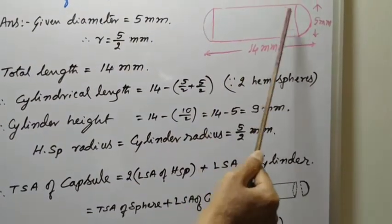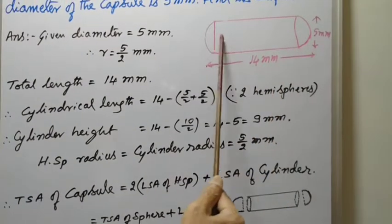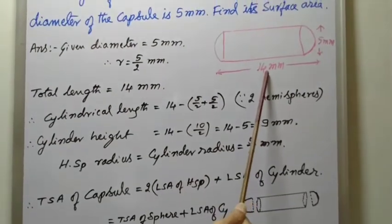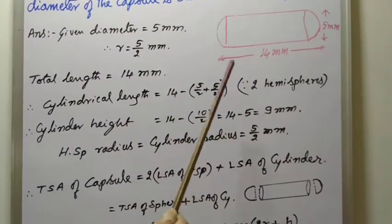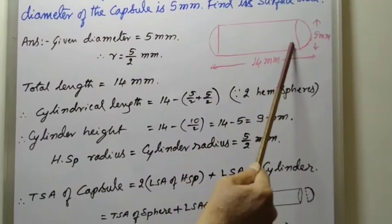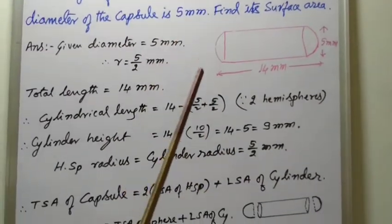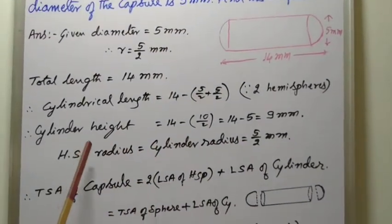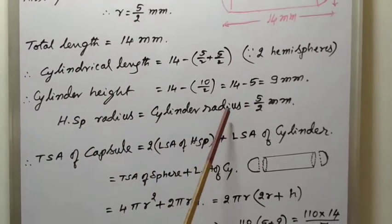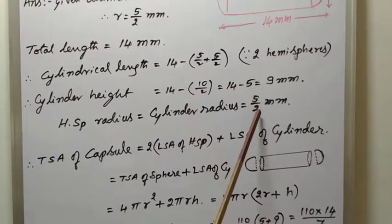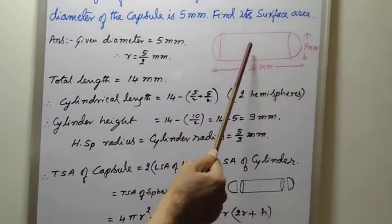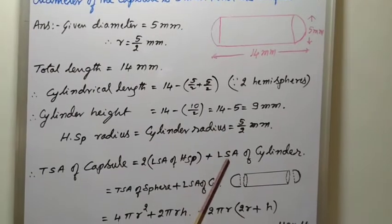This length from this end to this end 9 millimeters. Sum of these two hemispheres total equals 40 millimeters. This is the height of cylinder. The length of cylinder is the height of cylinder, that is equal to h. Hemispheres radius equals cylinder radius, that is also 5 by 2 millimeter. This hemispheres radius 5 by 2, this cylindrical part also 5 by 2 radius.